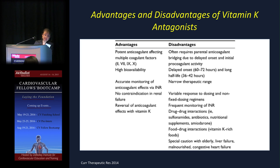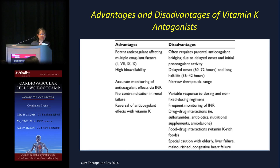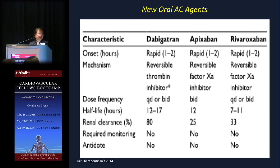As for treatment, anticoagulation is the root of the whole therapy. We grew up with vitamin K antagonists, and while we now have many more choices, VKAs still have advantages: they can be monitored, used with renal dysfunction, and reversed with vitamin K. The new oral anticoagulation agents include dabigatran, apixaban, and rivaroxaban — with rapid onset of action, once or twice daily dosing. Dabigatran has the greatest renal clearance with strict GFR criteria for safe use.